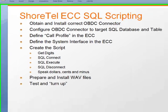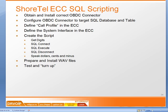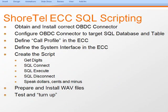To get started with the ECC and SQL scripting necessary to support this simple application we're going to create together, you're going to need to obtain and install the correct ODBC connector — which you can download from mysql.com. You will need to define a call profile in the ECC and define the system interface in the ECC. We're going to be working with some scripts and will use the graphical scripting tool to accomplish this. You'll also need to prepare your announcements, create your WAV files, and get ready to test and turn up the application.